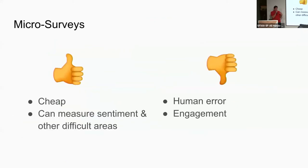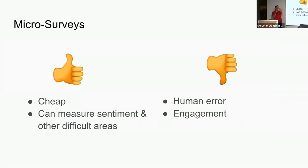Once you build it, it's cheap to maintain and it does help you measure sentiment in areas that are otherwise difficult to measure with telemetry. But there are downsides: there's no guarantee that a developer actually hits the right response, and there's the engagement problem. If you don't put it in a place developers find useful — or even make it blocking — if they can merge the PR without responding to the survey, you're not going to see great engagement. My take currently: if it's something that doesn't happen frequently and you're very sure the noise rate is low, you can make it blocking and get a good engagement rate.